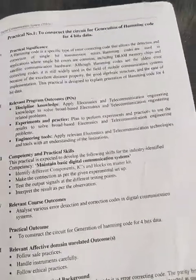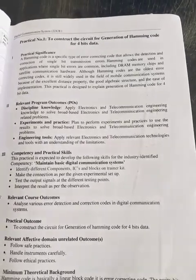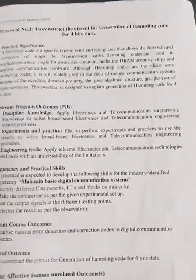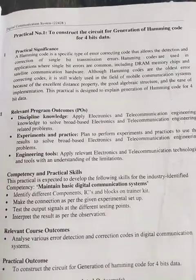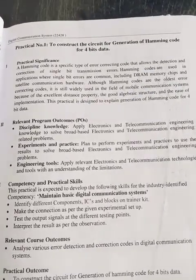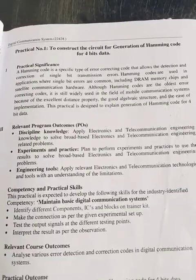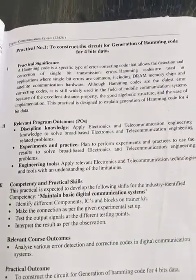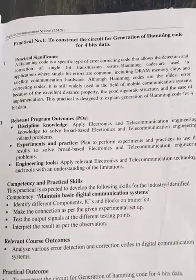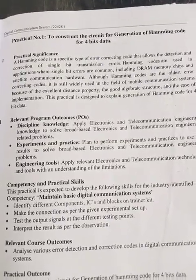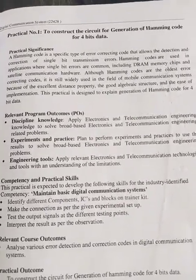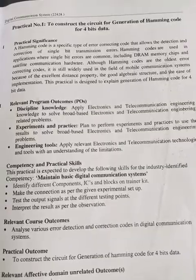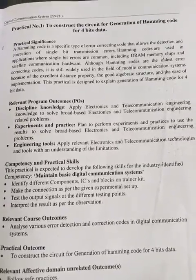Today's practical is to construct the circuit for generation of Hamming code for 4-bit data. The practical significance is that Hamming code is a code used for error correction and error detection. So if we have 4-bit data, then total 3 parity bits are generated, and after that a total 7-bit code will be generated. We can identify the parity bits with the help of the circuit.